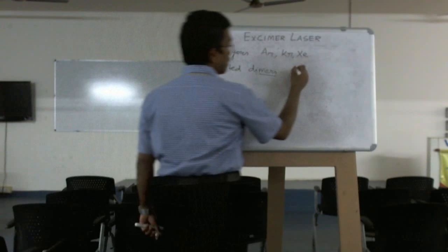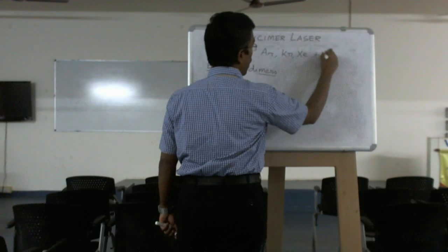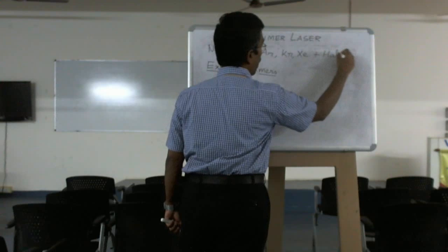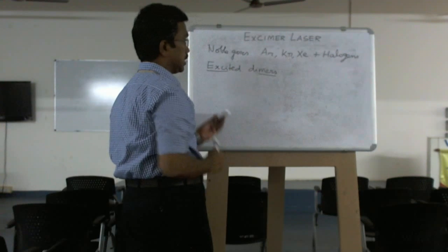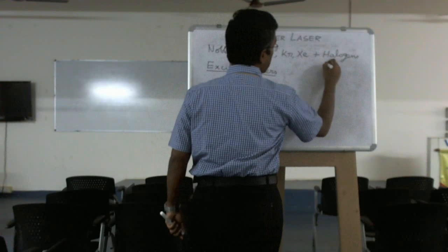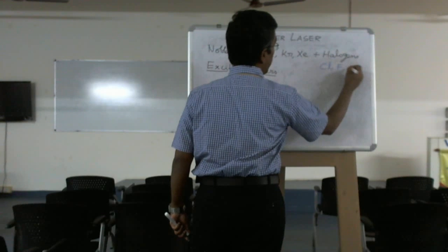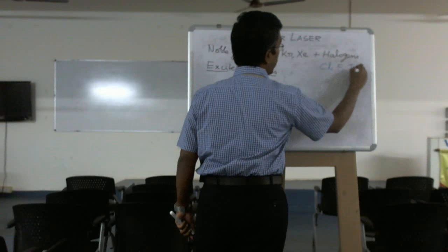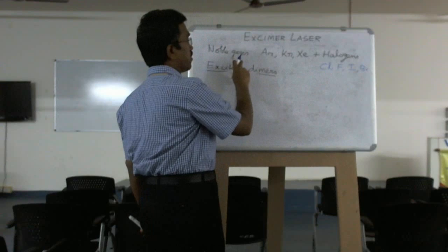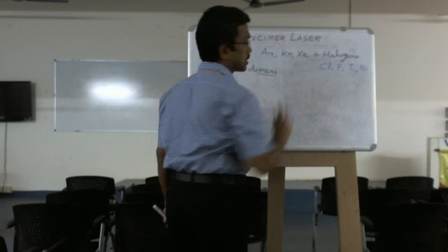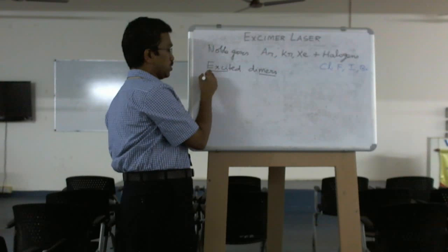Example is one type of noble gas plus halogens - that is chlorine, iodine, or bromine. So it is a combination of noble gas plus halogens, or simply we can call it a mixture of gases.